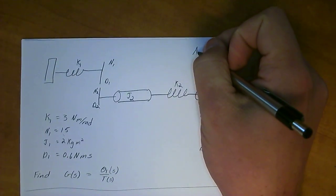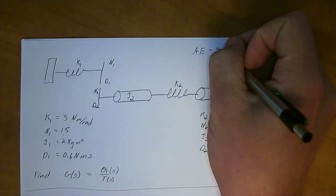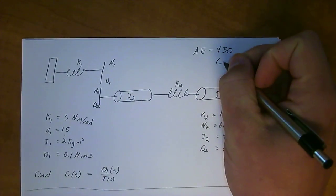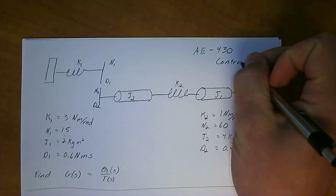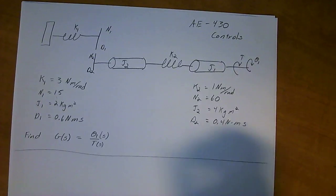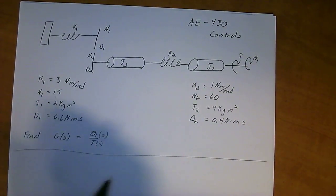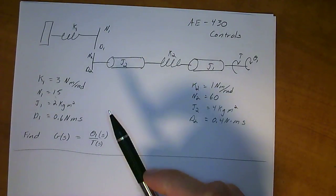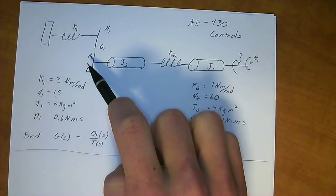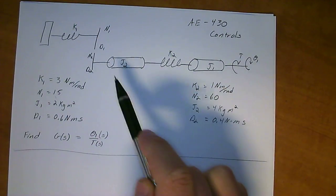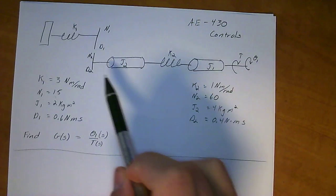Hey everybody and welcome to AE-430 Controls, Controls Engineering and Office of Design. What I have here is a rotational mechanical system with a gear inside of it. This is an interesting problem because you actually have to transport forces and impedances through this gear system.